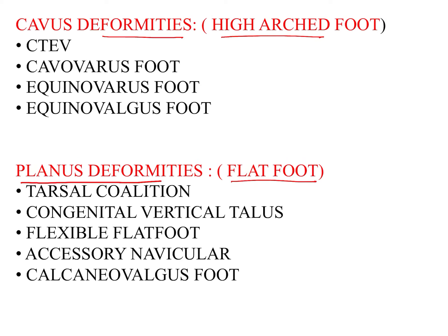In cavus deformity we have CTEV, cavovarus foot, equinovarus foot, and equinovalgus foot. While in planus deformity or flat foot deformities, we have tarsal coalition which is a rigid flat foot, congenital vertical talus, flexible flat foot, accessory navicular bone, and calcaneovalgus foot.